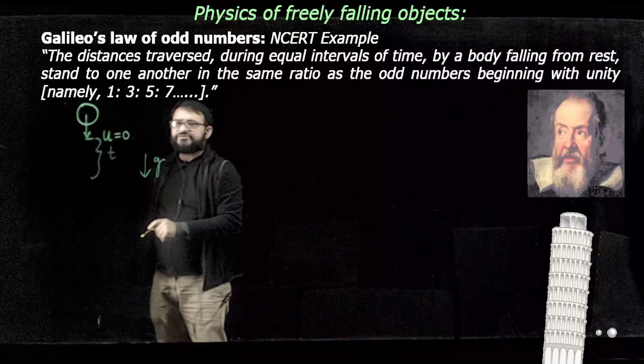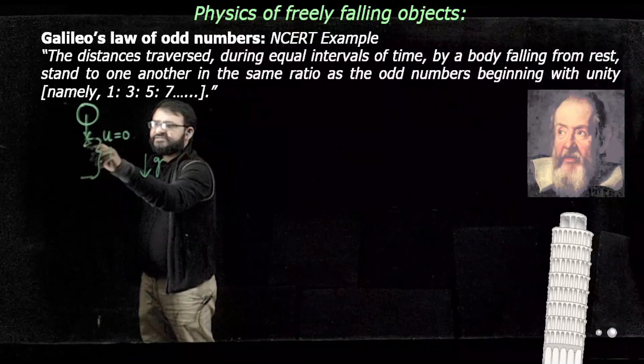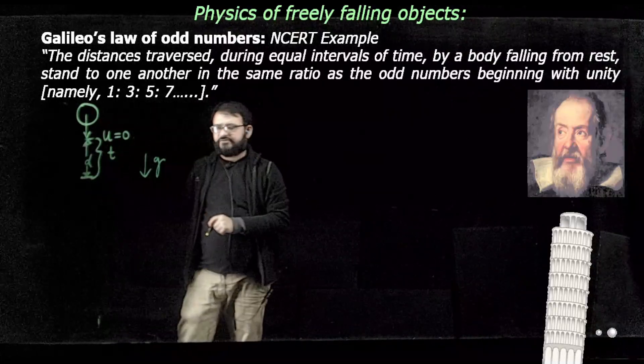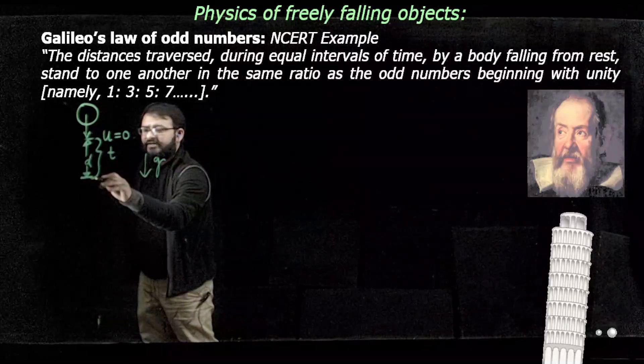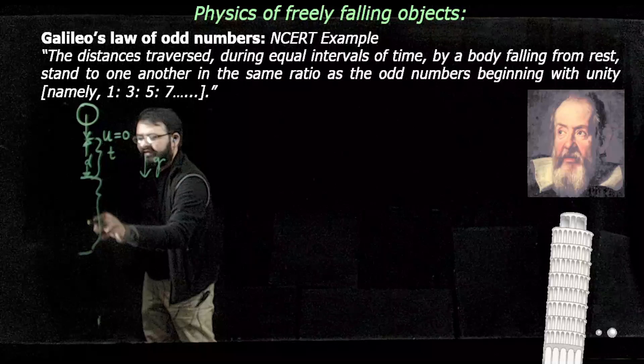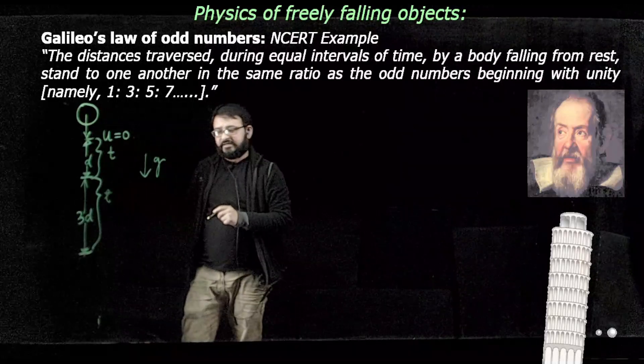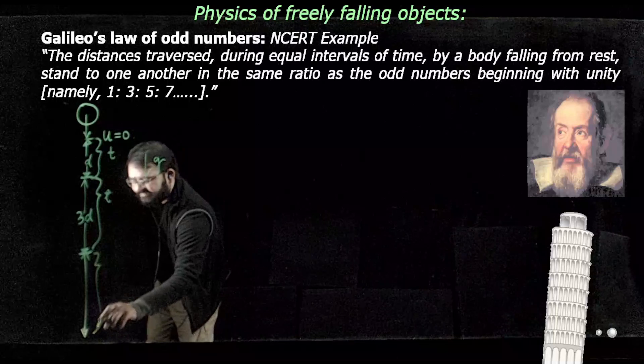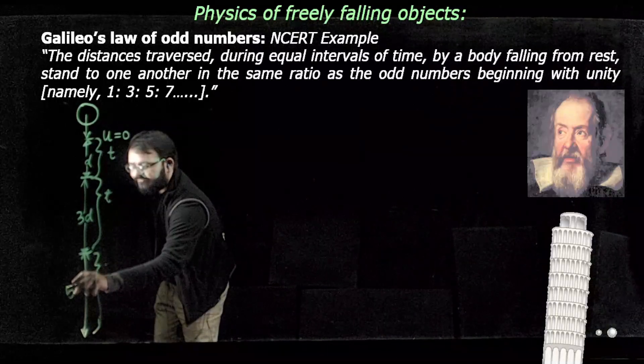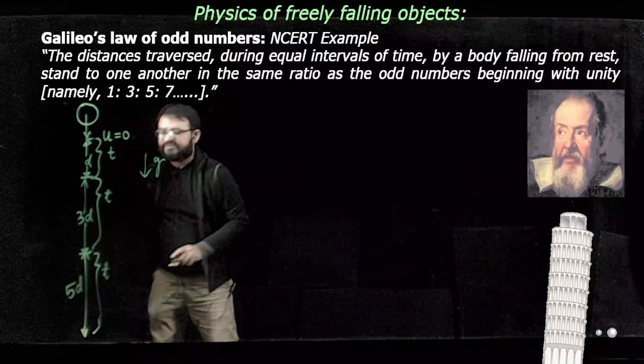then at equal time intervals—suppose T is the time interval and D is the distance traversed in the first equal time interval—subsequently, the body will fall approximately 3D. The time interval is exactly the same. And if you continue for the next time interval, it will turn out to be 5D. The time interval is going to be the same.